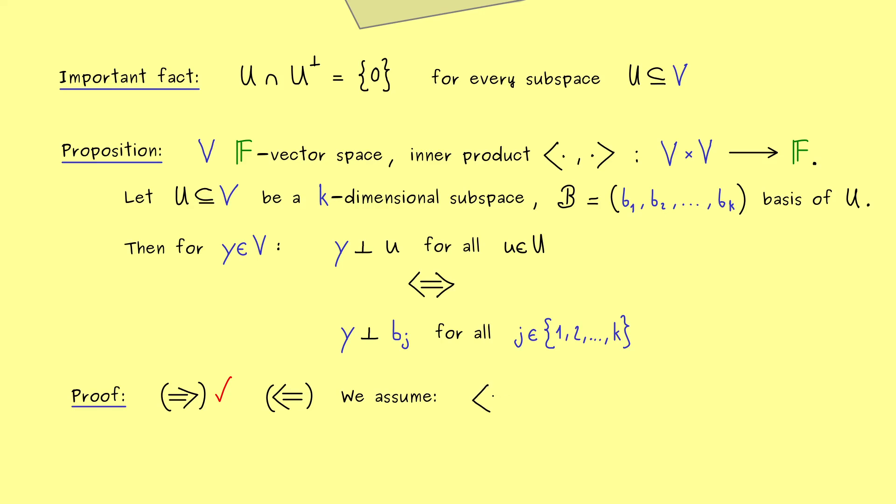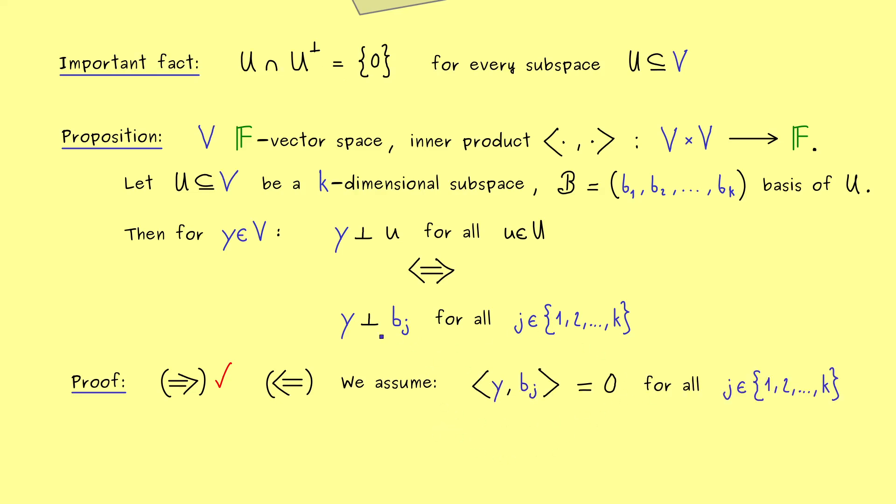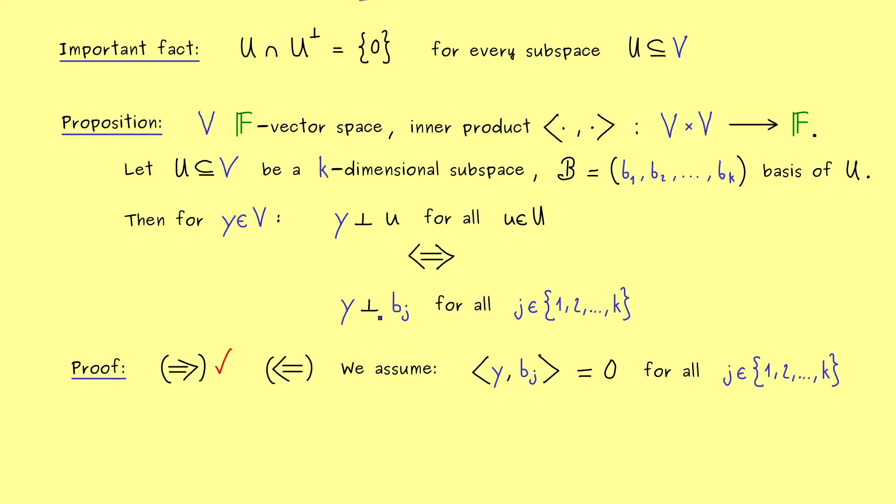So let's first start with the assumption here. We know that y gives us 0 in the inner product with bⱼ. So you know, this is exactly the definition of this perpendicular sign. But now we don't have any problem at all. We can just multiply with scalars on both sides. Let's call the scalars λⱼ, and then you see, no matter what we do, which scalars we choose, we will never change the 0 on the right hand side. And we also will not change it if we sum up all these terms. So now we just have the sum from 1 to k.